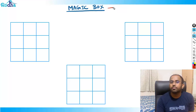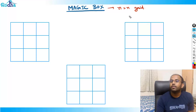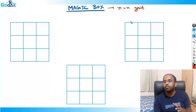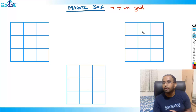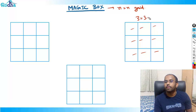What do we mean by magic box? A magic box is basically for an n cross n grid. For example, a 3 cross 3 grid has 3 rows and 3 columns — 9 squares total. Similarly, a 5 cross 5 grid has 5 rows and 5 columns — 25 squares.